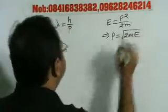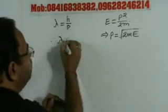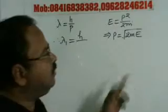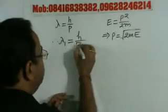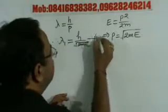Energy is given as E. So we can write here that lambda 1 is equal to H divided by under root 2ME. This will be equation number 1.